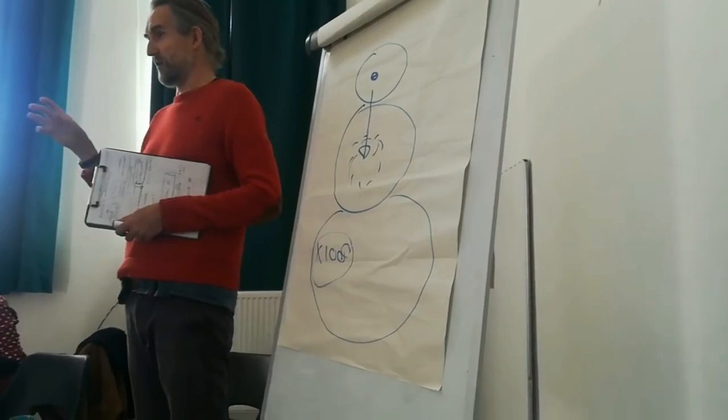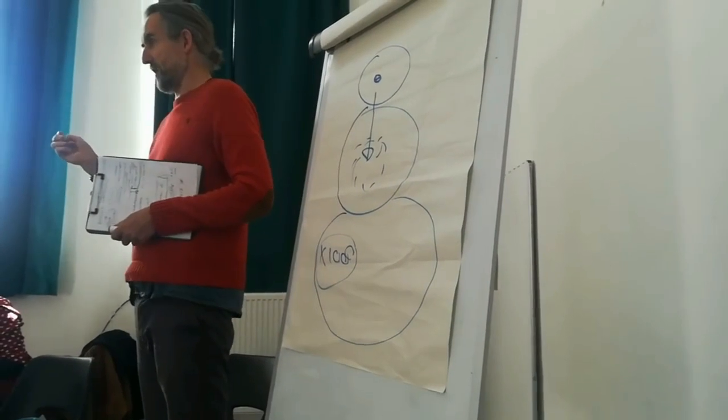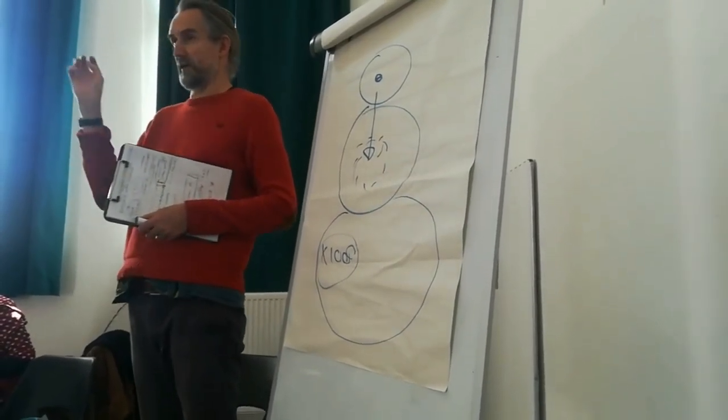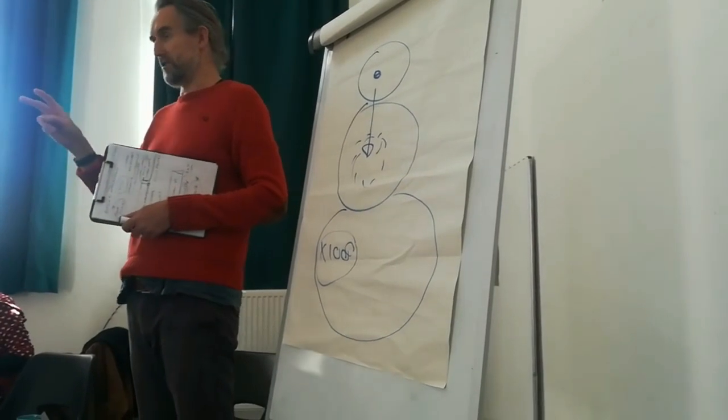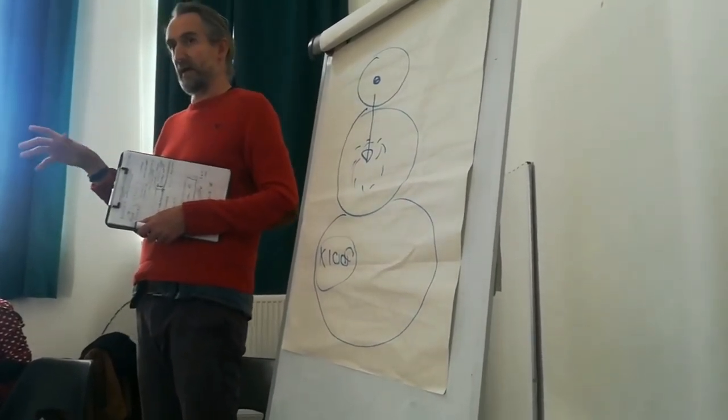So you can see movements historically that go out of balance one way or the other. For instance, you might have Leninist movements that basically say, right, we're going to take down the state and everyone has to do exactly what three men at the top say. So obviously that's out of balance, do you see what I mean.